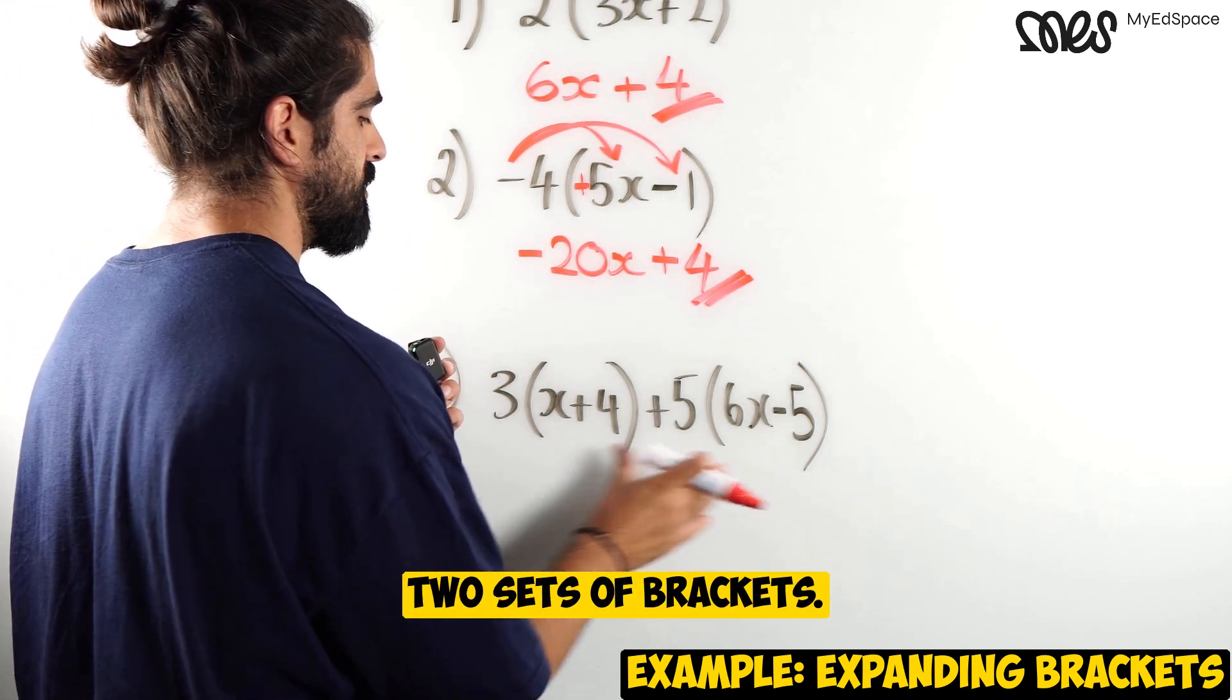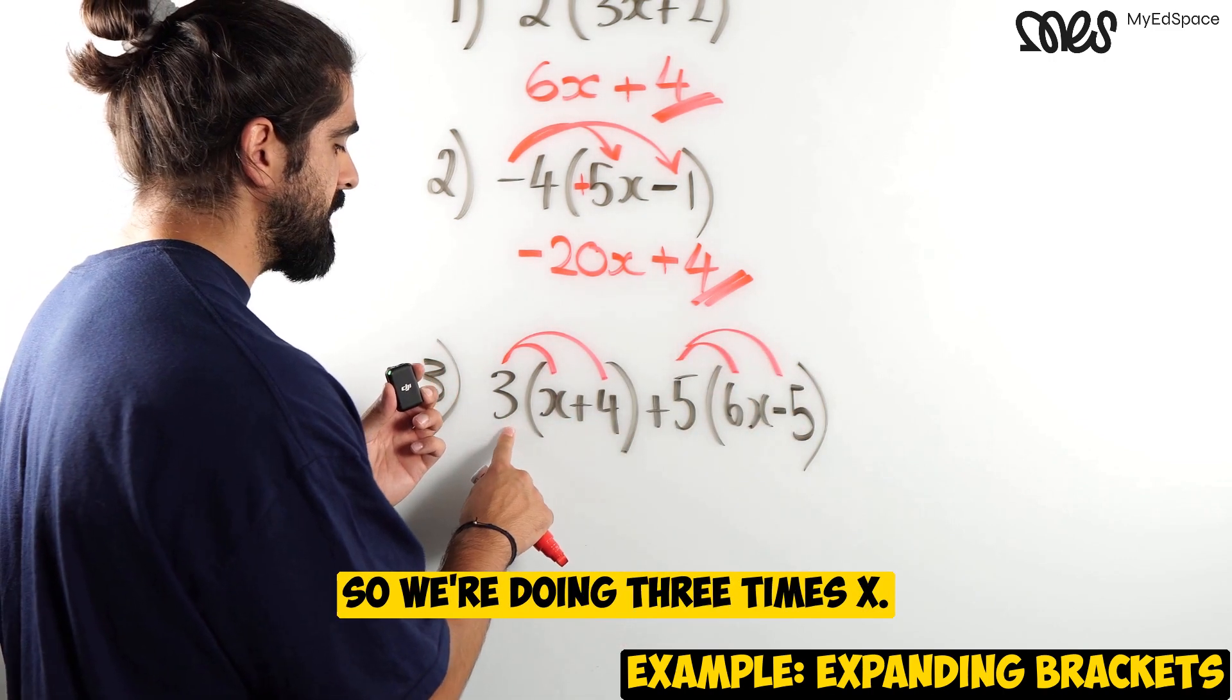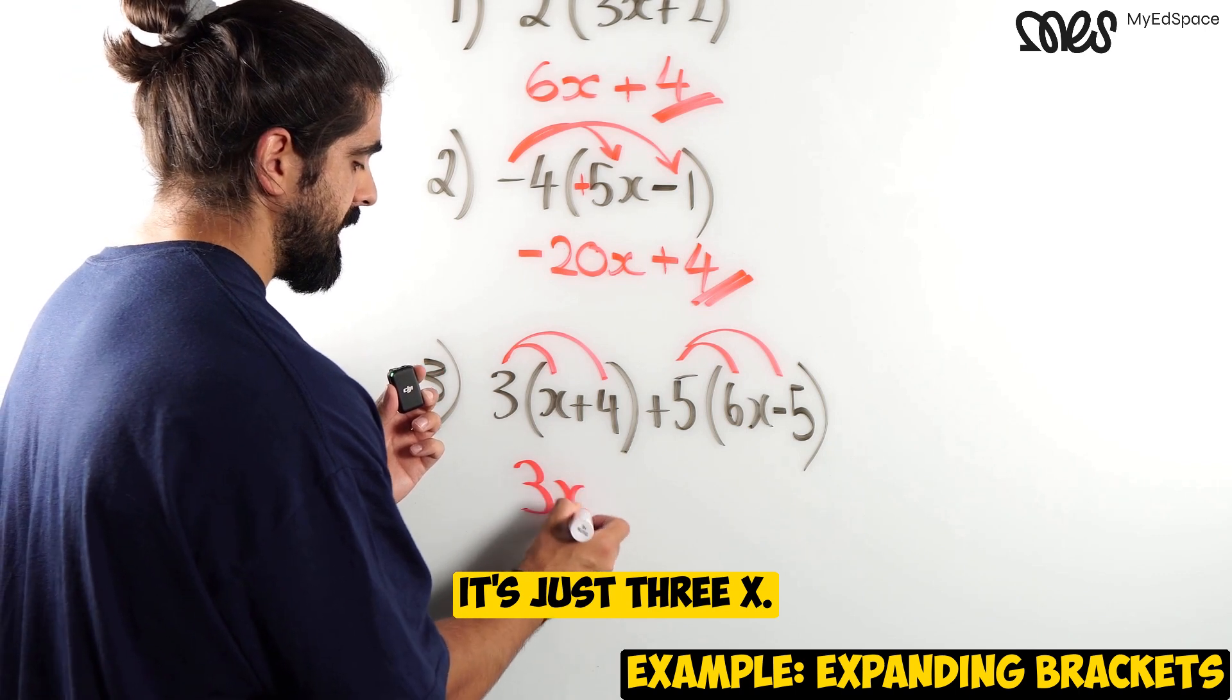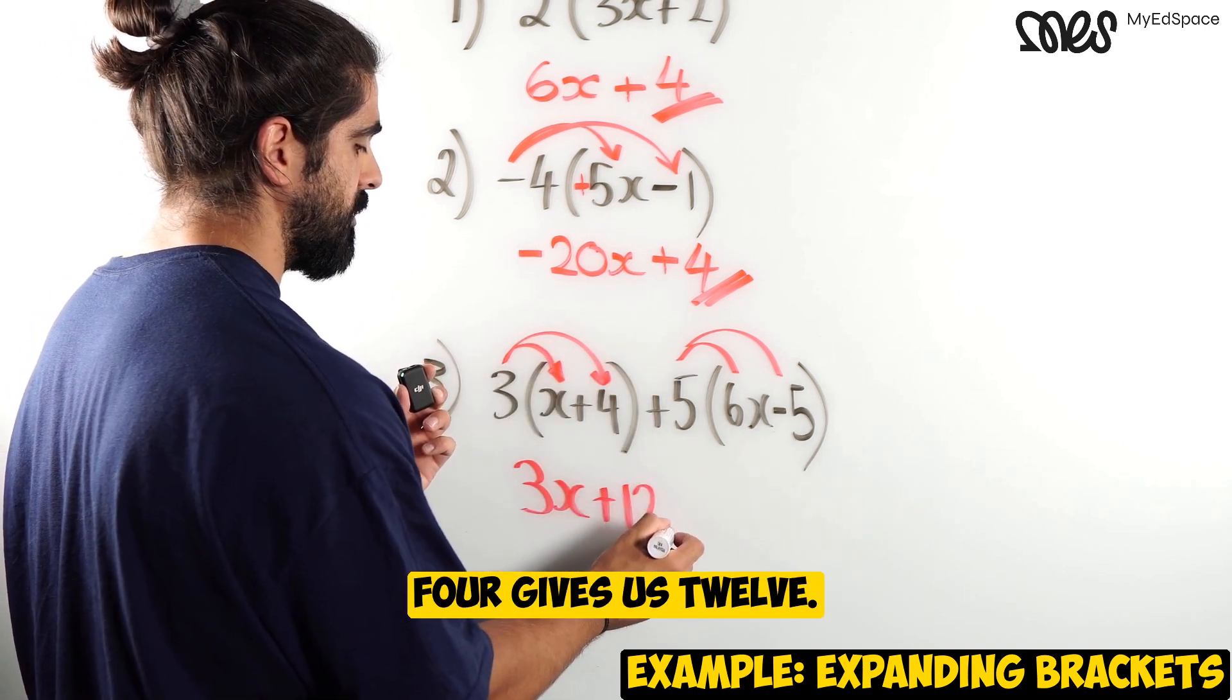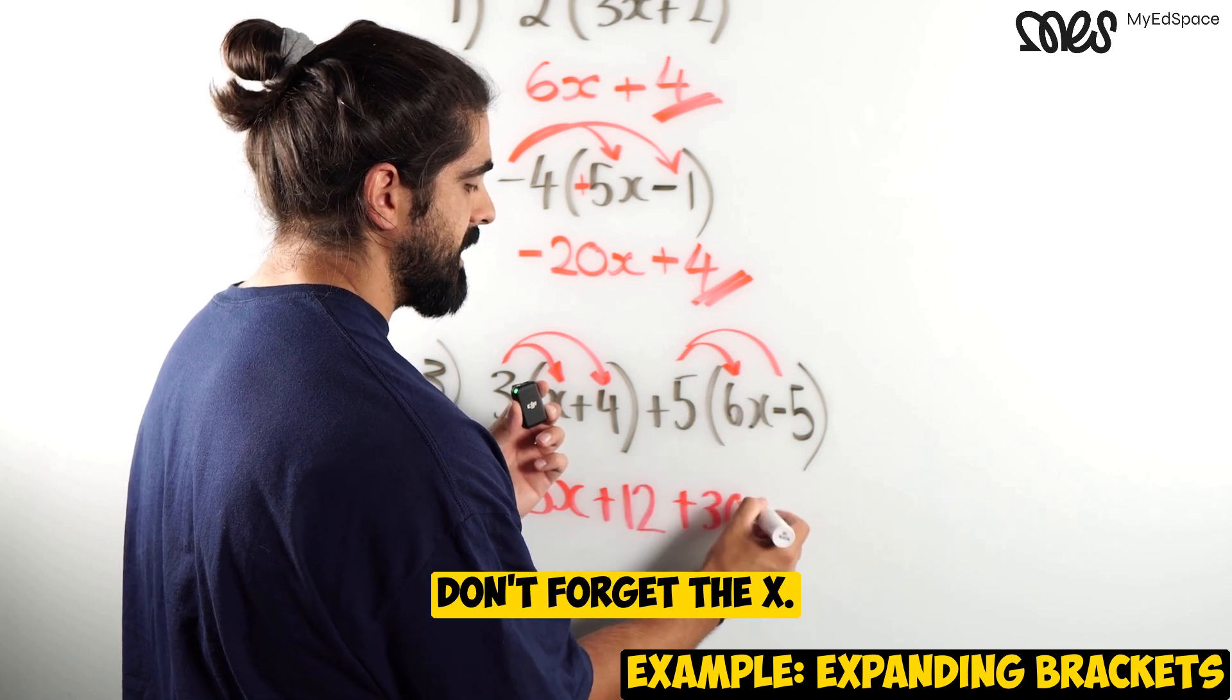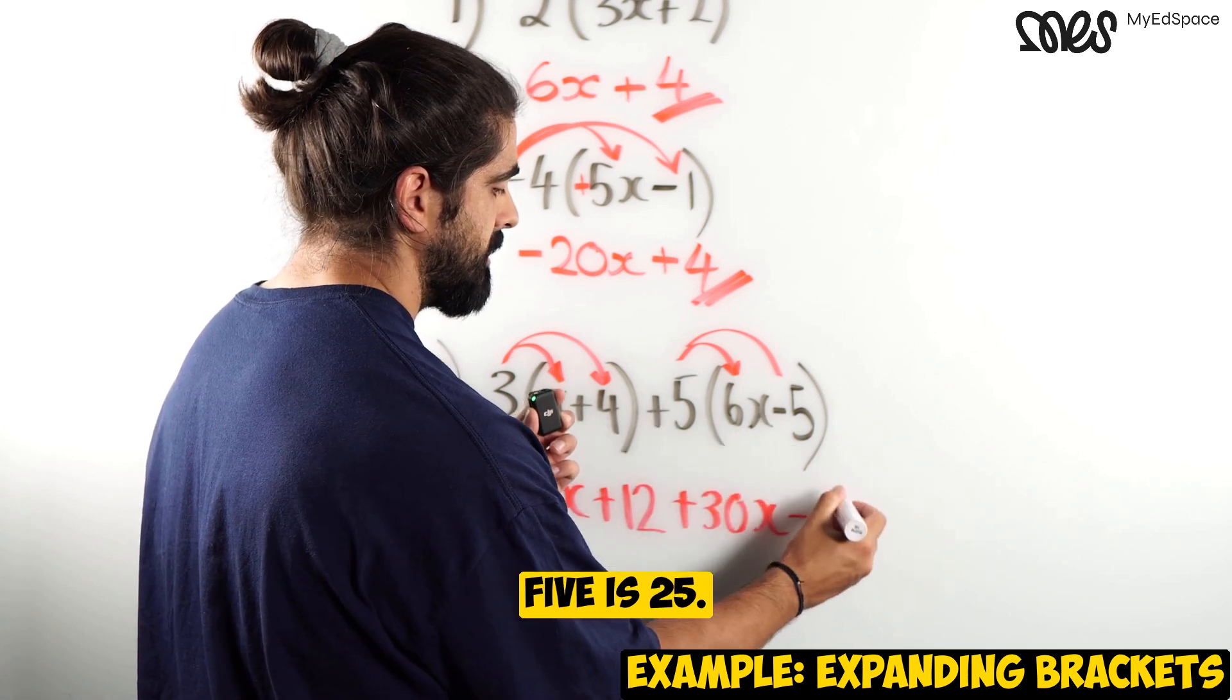Finally, we have two brackets, two sets of brackets but they are split up by this plus. So we just need to expand these and these separately and then we're going to simplify. So we're doing 3 times x. Now, 3 times x, there's nothing to simplify there. We just don't need to write the multiplication symbol in between. It's just 3x. Then we've got 3 times 4, 3 times 4 gives us 12. Over here, we have a positive 5 times 6, 5 times 6 gives me positive 30. Don't forget the x. Then we've got 5 times minus 5. Positive negative makes negative, 5 times 5 is 25.